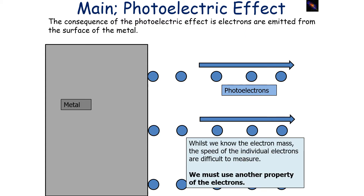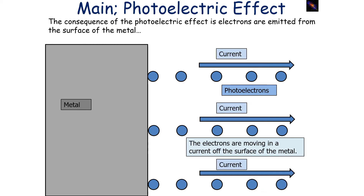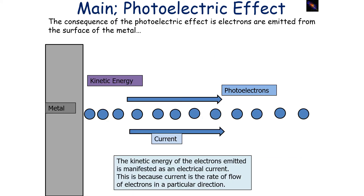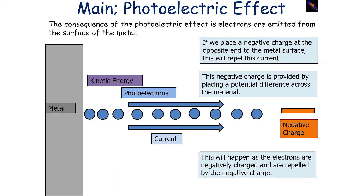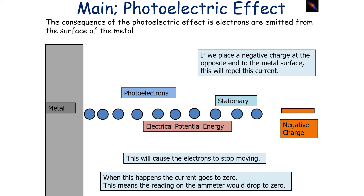Whilst we know the electron's mass, the speed of individual electrons is difficult to measure, so we must use another property of the electrons. The electrons are moving in a current off the surface of the metal. The kinetic energy of the emitted electrons is manifested as an electrical current, because electrical current is the rate of flow of charge of electrons in a particular direction. If we place a negative charge at the opposite end to the metal surface, this will repel the electrons. The negative charge is provided by placing a potential difference across the material, and the electrons — being negatively charged — are repelled, causing them to stop moving.